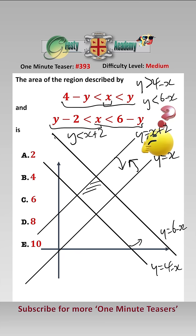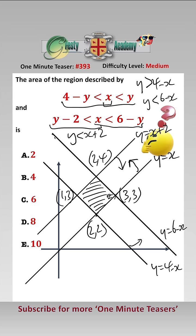So the region that we want to find the area of is this. These coordinates are easily found: that one is (3, 3), this one here is (2, 2), this one here is (1, 3), and this one at the top is (2, 4).